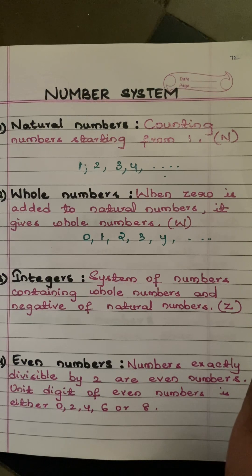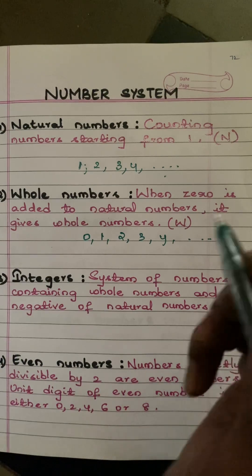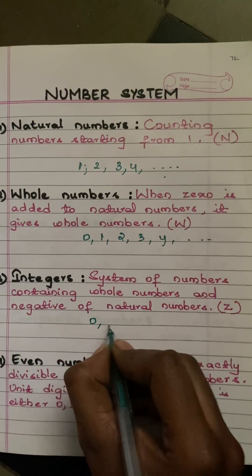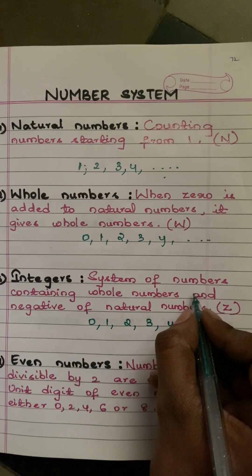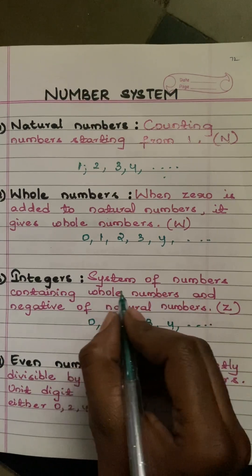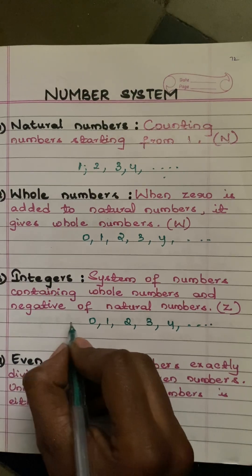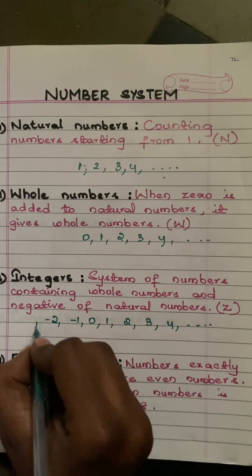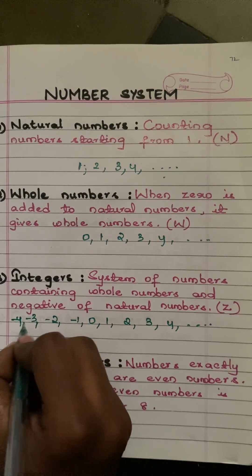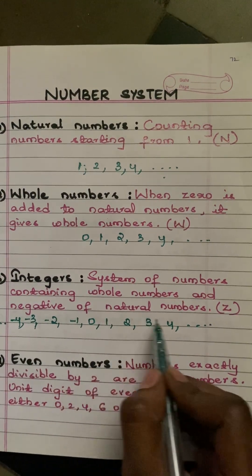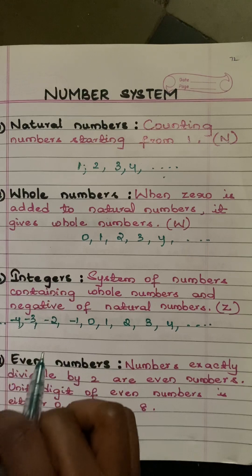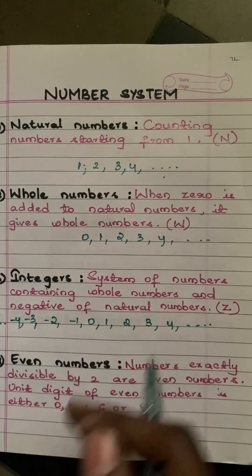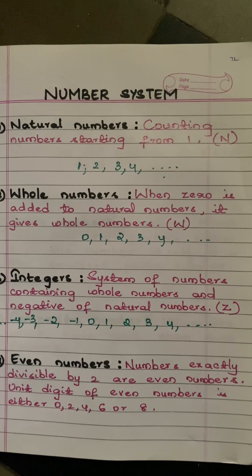Next we have integers. Integers are a system of numbers containing whole numbers and the negative of natural numbers. Whole numbers are zero, one, two, three, four and so on, and the negative of natural numbers are minus one, minus two, minus three, minus four and so on. All of these put together are called integers, and integers are denoted by the letter Z.